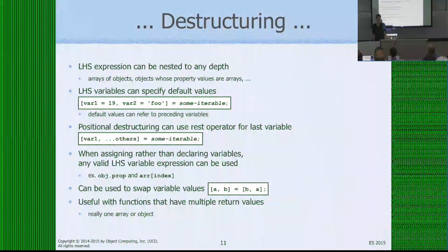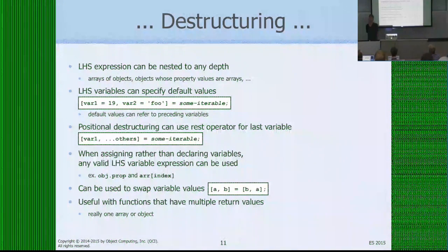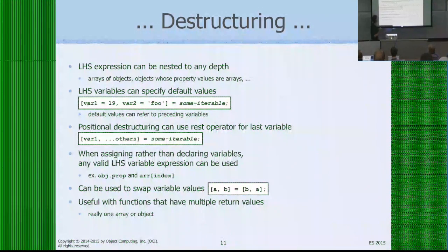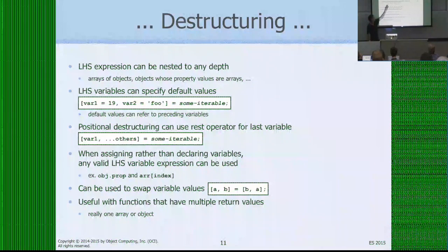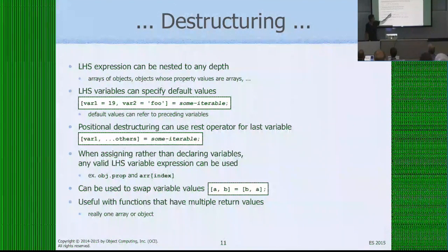The left-hand side can be nested to any depth — arrays of objects, objects with array values, any combination. Left-hand side variables can have default values, so if there's no match on the right it takes the default. With positional destructuring you can use the rest operator to grab some initial elements and then put all the rest into a new array. You can also assign into things more complex than simple variable names, like a specific property of an existing object or an element of an existing array.